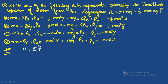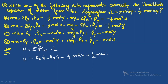To find the Hamiltonian, we use H = Σ p_k q̇_k − L. Here the coordinates are x and y, so H = p_x ẋ + p_y ẏ − L, where L = ½mẋẏ − ½mω²xy. We need to replace ẋ and ẏ with momenta since the Hamiltonian is a function of coordinates and momenta only.